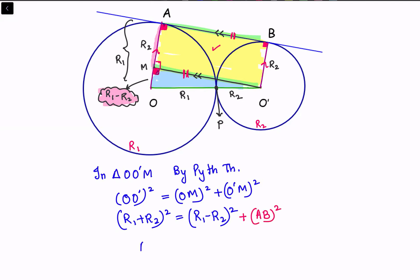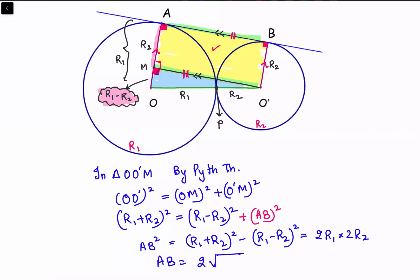Solving this, AB squared equals (r1 + r2)² minus (r1 - r2)². Applying the difference of squares identity — a² minus b² equals (a+b)(a-b) — this gives 2r1 times 2r2. Therefore AB equals 2 times the square root of r1 times r2. This is our answer. This formula is very useful and can be used directly in most MCQ questions.